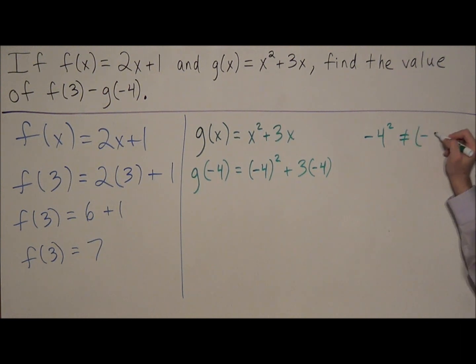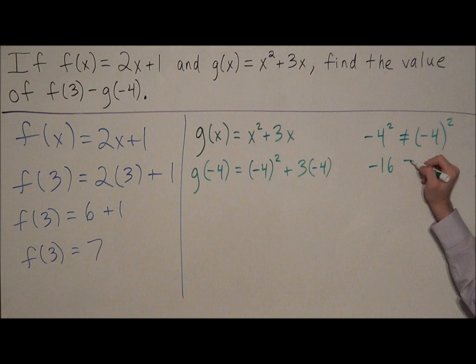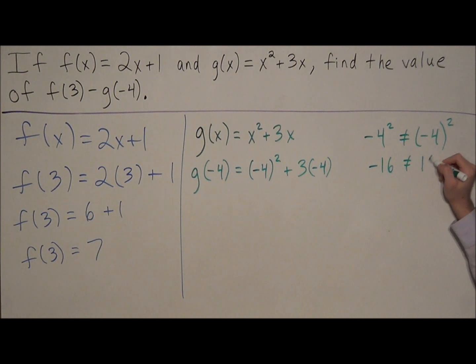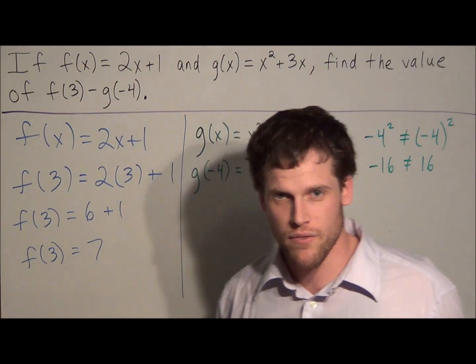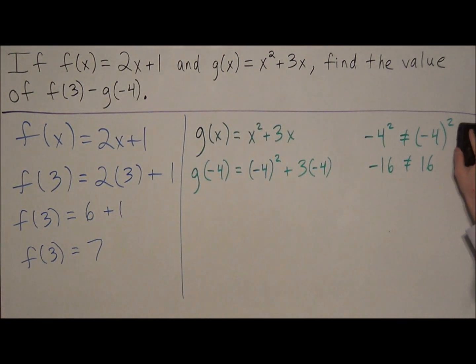If you simplify this, this will reduce to negative 16, while the right-hand side will reduce to positive 16. So that's why they're not equal, and you want to be careful and just make your life easier. Put parentheses there.